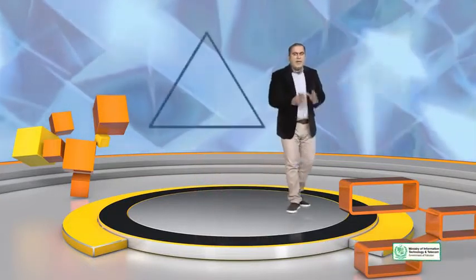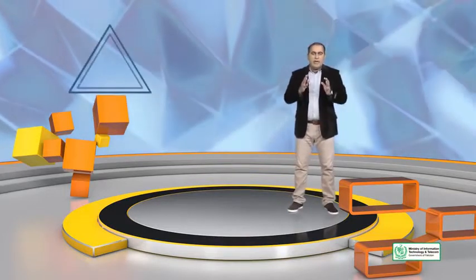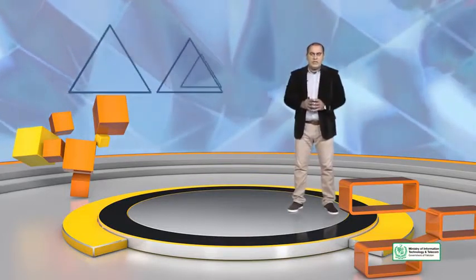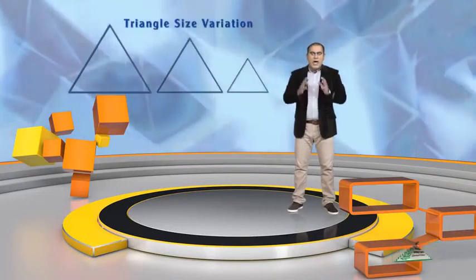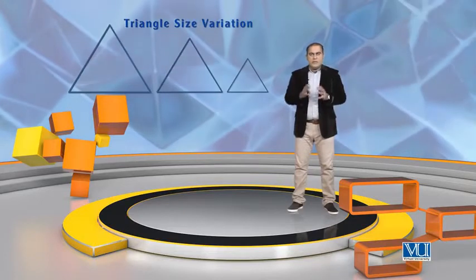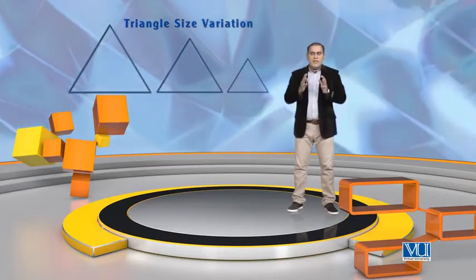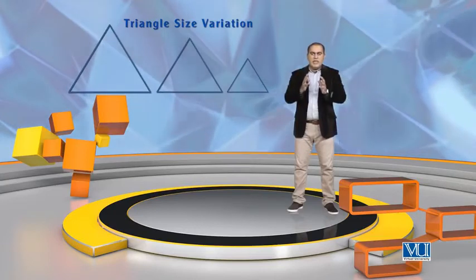اسی طرح سے اگر ہم geometric shapes میں دیکھیں، مثال کے طور پر آپ ایک triangle کو لیں اور triangle کی بڑے اور چھوٹے size میں different variations نکالیں۔ آپ دیکھیں گے کہ shape تو triangle ہی ہے لیکن ان کے size میں واضح variation یعنی فرق معلوم پڑے گا۔ تو پتہ یہ چلا کہ size کو جانچنے کے لیے comparison بہت important چیز ہے۔